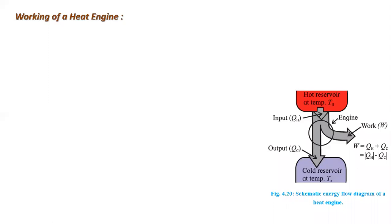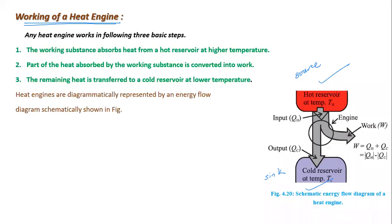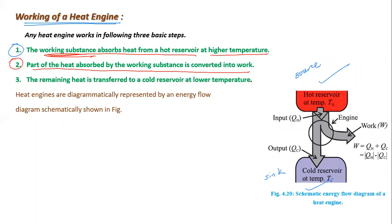Now let us learn how the heat engine works. The parts are the hot reservoir (source) and the cold reservoir (sink). Any heat engine works in three basic steps. First, the working substance absorbs heat from the hot reservoir at high temperature. Second, part of the heat absorbed by the working substance is converted into work — not all the heat is utilized; some heat is lost.